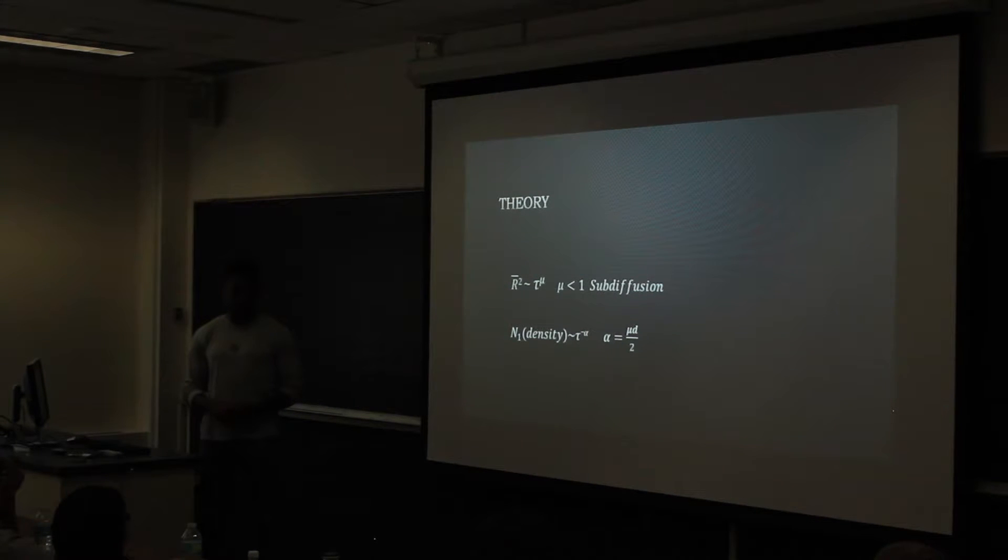And the theory that my professor gave me is that the mean square displacement of these monomers goes as tau to the mu, with again mu less than 1 being sub-diffusion specifically. And the density n1 going as tau to the minus alpha, alpha being the exponent that we're trying to fit our data on, and alpha going as mu d over 2, with d being the dimension. We specifically worked with one dimension and two dimensions.